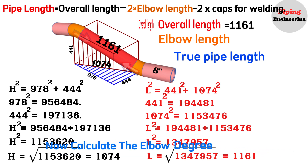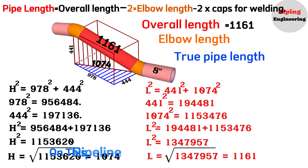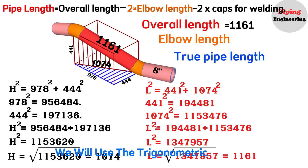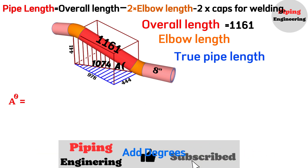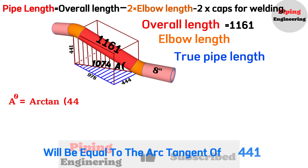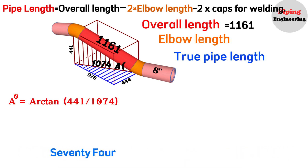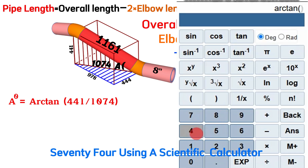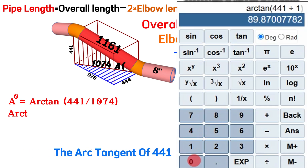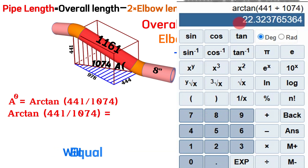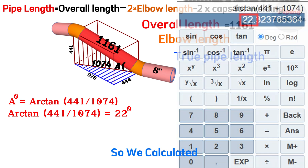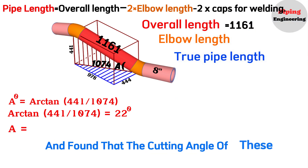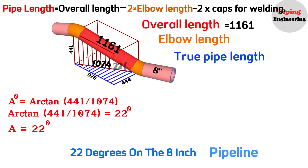Now let's calculate the elbow degree for these dimensions. To find the elbow degree we will use the trigonometric function. Denoting this angle as A, A degrees equals the arctangent of 441 divided by 1,074. Using a scientific calculator, the arctangent of 441 divided by 1,074 equals approximately 22 degrees. So the cutting angle of these elbows is 22 degrees on the 8-inch pipeline.